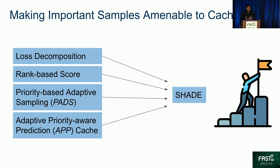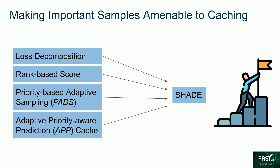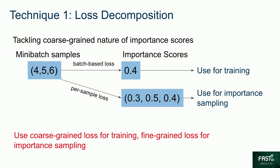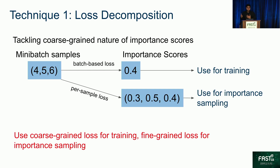Shade adopts four techniques to address these challenges: loss decomposition, rank-based importance scores, the patch sampling policy, and the app cache. To address the first challenge of the coarse-grained nature of important samples, Shade adopts a loss decomposition technique, meaning that it separates the individual loss of the samples to understand the importance of each sample.